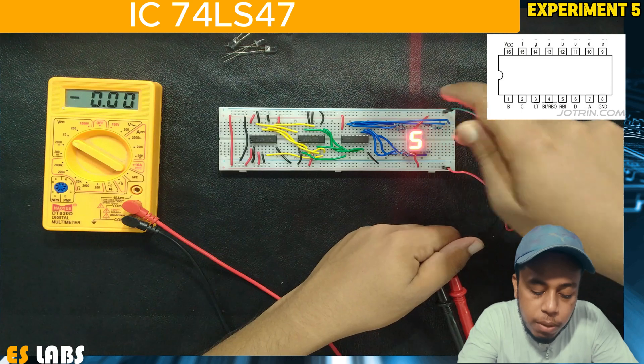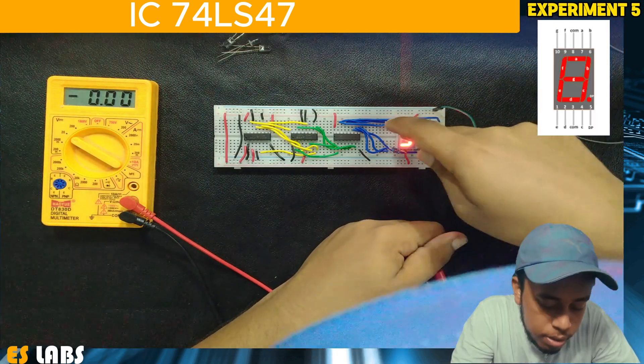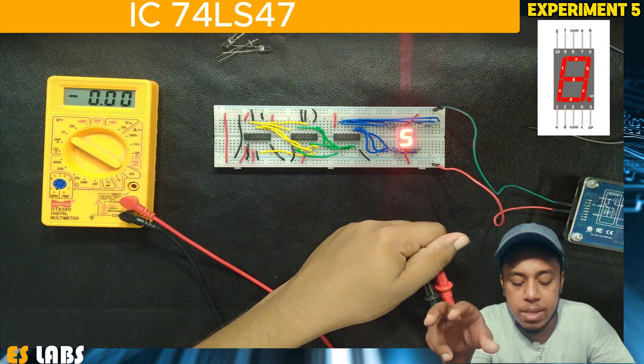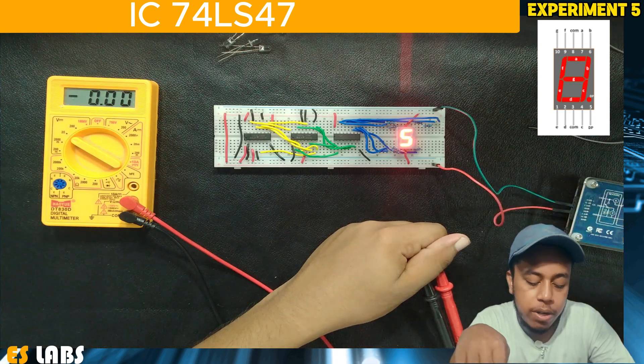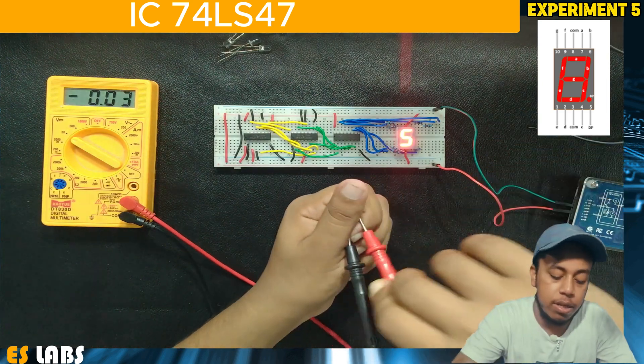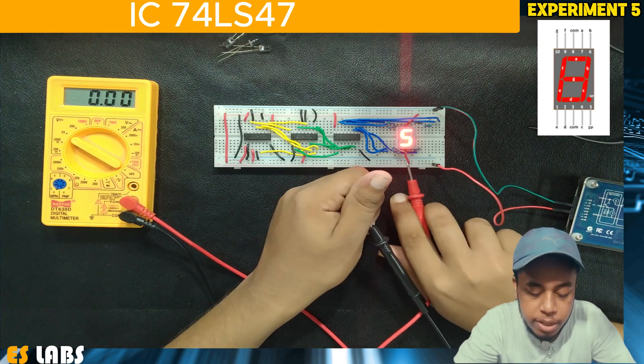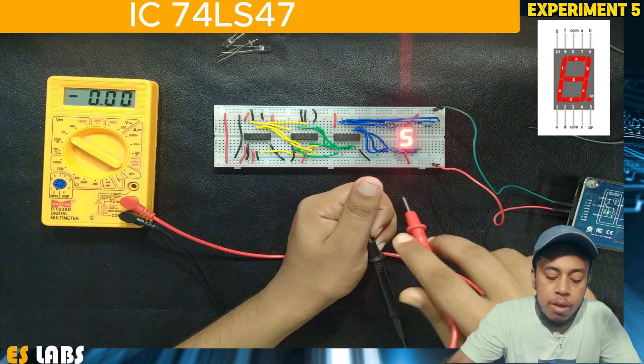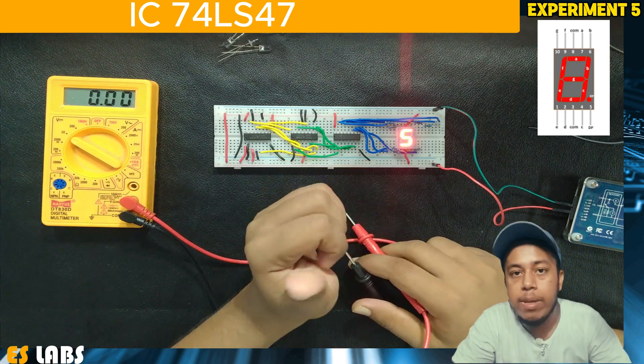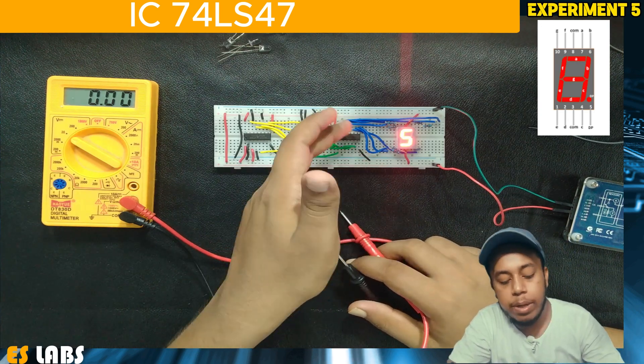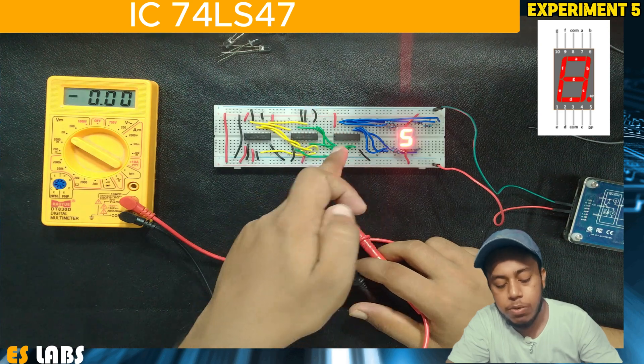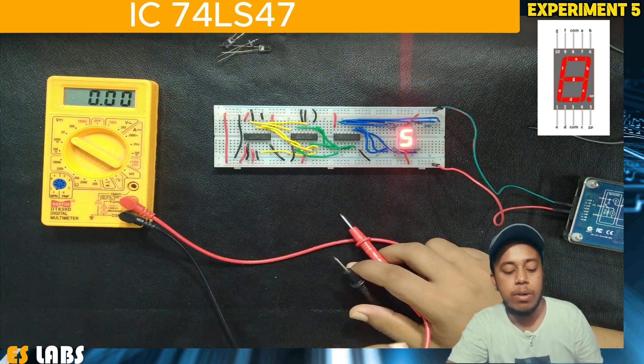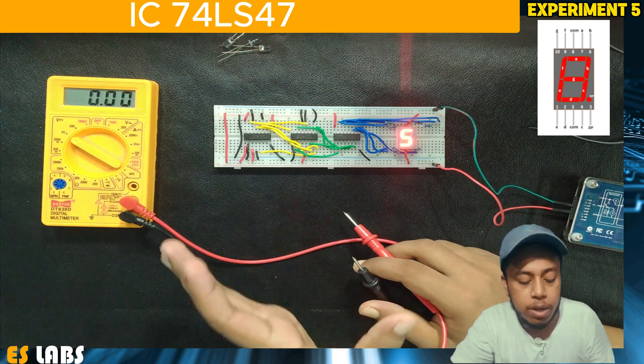The 7 segment display has 10 pins. This is common anode. Pin 3 is VCC and pin 8 is also VCC. Other pins are A, B, C, D, E, F, G which are coming from the 74LS47 and connected through 220 ohm resistors. These are our connections.